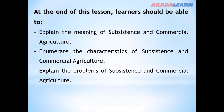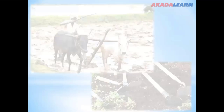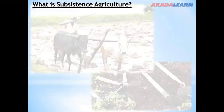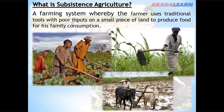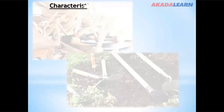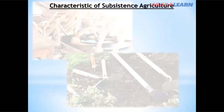You should also be able to explain the problems of subsistence and commercial agriculture. What is subsistence agriculture? Subsistence agriculture is a farming system whereby the farmer uses traditional tools with poor inputs on a small piece of land to produce food for his family and for his own consumption.